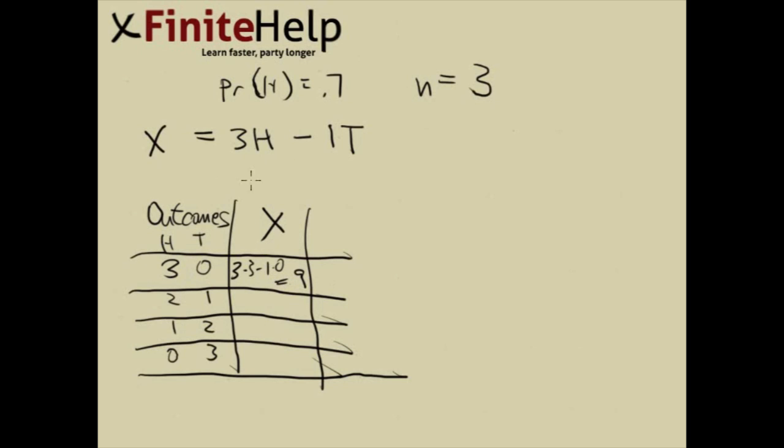And the next one is going to be 3 times 2 minus 1 times 1, so 5. And the next one, 3 times 1 minus 2, so it's going to be 1. And then negative 3.